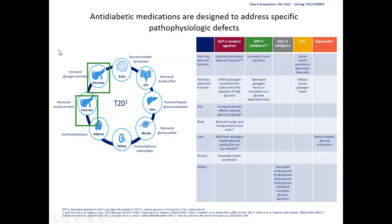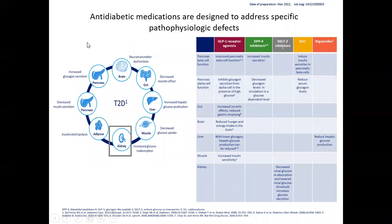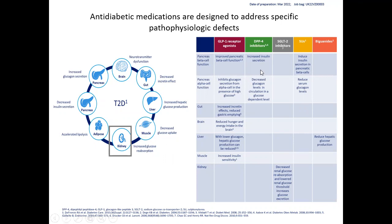DPP4 inhibitors mainly affect the pancreas by suppressing glucagon release and increasing insulin secretion. SGLT2 inhibitors block the sodium-glucose transport channels in the kidneys, preventing glucose reabsorption, so glucose is excreted into the urine, thereby lowering sugar levels.